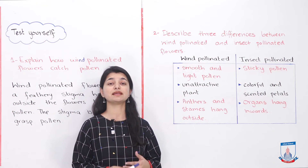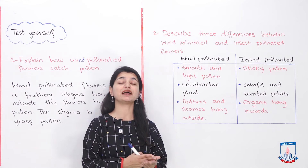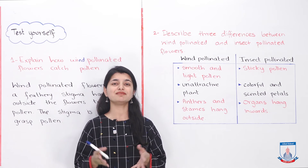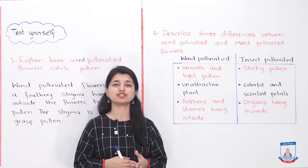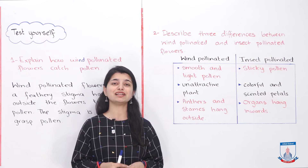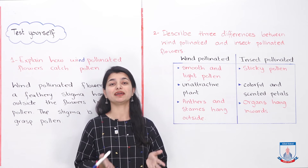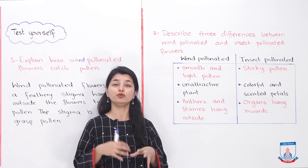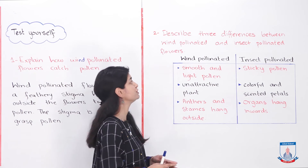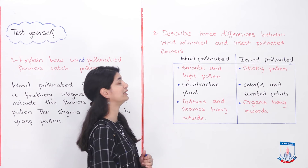Question number 2 is a conceptual question in which you have to evaluate and tell the difference between insect pollinated plants and wind pollinated plants. We have studied and discussed both — in the last lecture we discussed insect pollinated plants, and in today's lecture we focused on wind pollinated plants. The question is: describe three differences between wind pollinated and insect pollinated flowers.